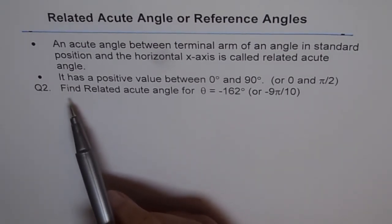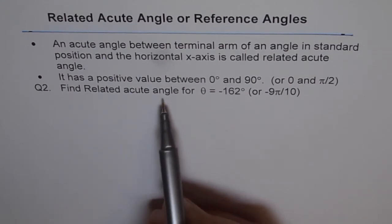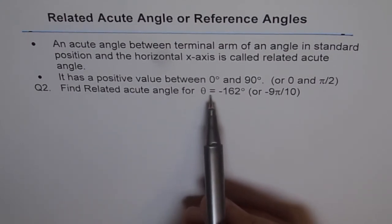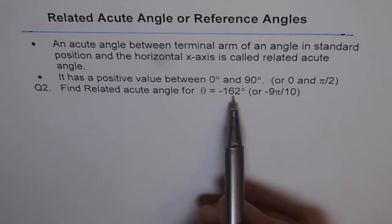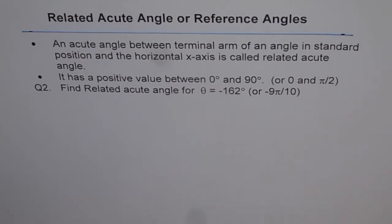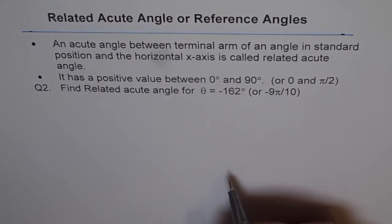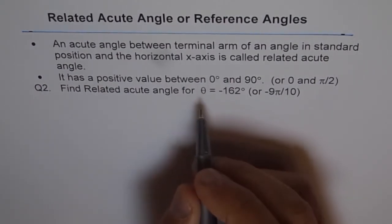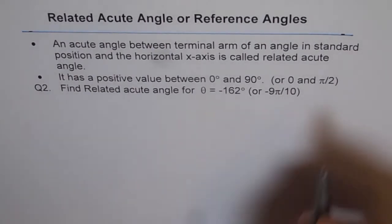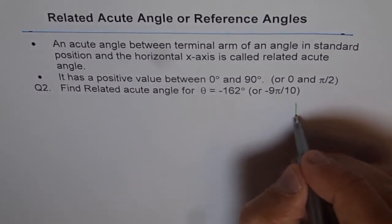Question 2: Find related acute angle for θ = -162° or -9π/10. So let's see where this principal angle θ lies on the coordinate plane. Let's draw one.